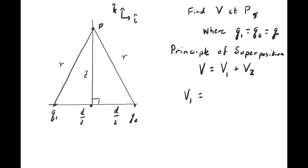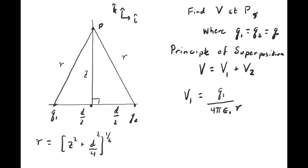Coulomb's law obeys the principle of superposition. The electric field obeys superposition. Since the electrostatic potential is obtained by doing a line integral of the electric field, the electrostatic potential also obeys superposition. So the total potential at point P is just V1 plus V2. The electrostatic potential due to q1 is q1 divided by 4 pi epsilon-naught r. The geometry gives r as the square root of z squared plus d squared over 4.